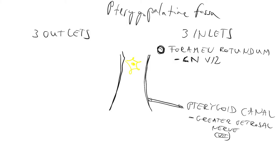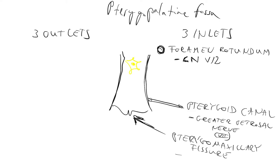What is the third opening or third inlet of the Pterygopalatine fossa? This one — this is the Pterygomaxillary fissure. The Pterygomaxillary fissure carries the maxillary artery. So we now have the three inlets, and let's see the three outlets.